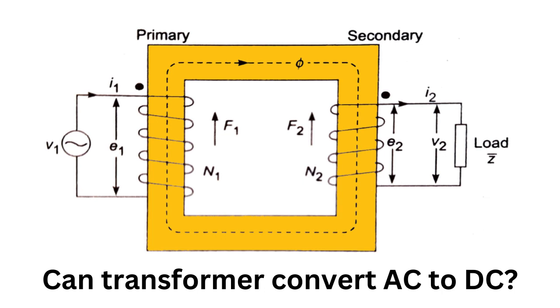In conclusion, a transformer can change the voltage level of an alternating current, but it cannot convert AC to DC.